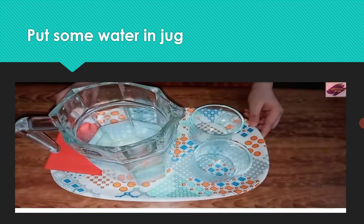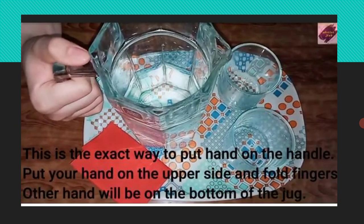Put some water in the jug. This is the exact way to put your hand on the handle. Put your hand on the upper side and fold your fingers. The other hand will be on the bottom of the jug. You can see in the picture.